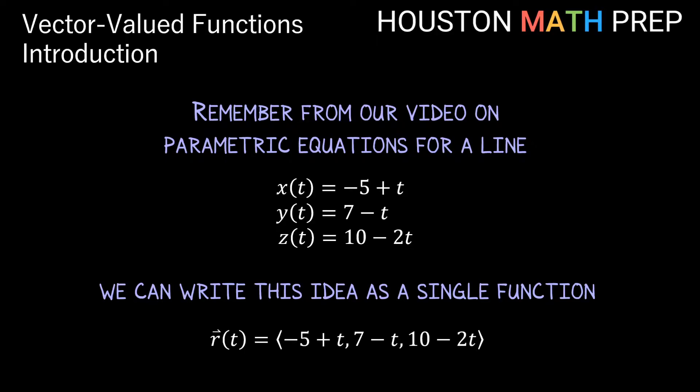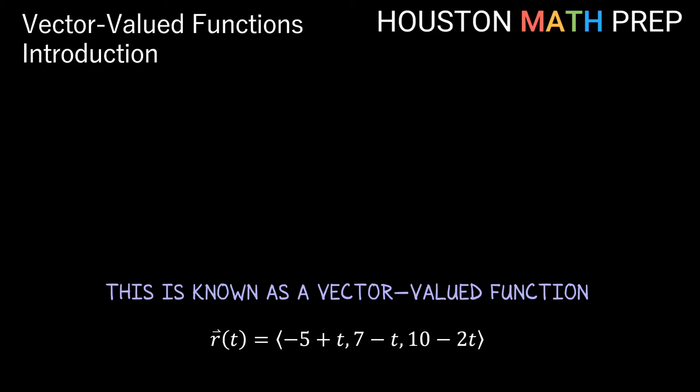So r(t) represents all of this information for x, y, and z that we have for the path in space above, but in vector form we'll call this type of function a vector-valued function.